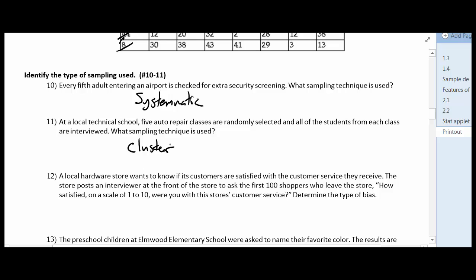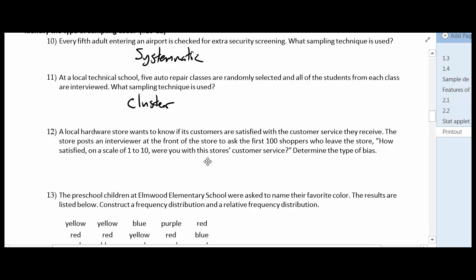So number 12, we're abandoning this sampling type and now we're going to look at bias. A local hardware store wants to know if its customers are satisfied with the customer service they received. The store posts an interviewer at the front of the store to ask the first 100 shoppers who leave the store. How satisfied on a scale of 1 to 10 were you with the store's customer service to determine the types of bias. So the first thing is, let's kind of go through what draws our attention to what might be the problem here. And the fact that they're standing there and asking the first 100 shoppers to leave the store. So they're not randomly selecting a sample. They're just saying we want to talk to the first 100 people.